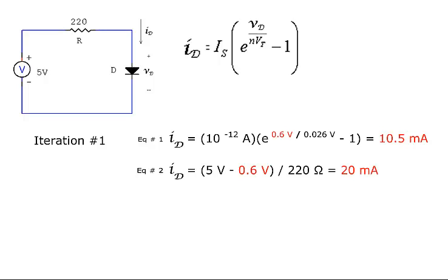The first iteration begins with a guess for the diode's voltage. In this example, the first guess is 0.6 volts. The resulting current from the first equation is 10.5 milliamps. The second equation produces 20 milliamps. They aren't even close, which means the guess was wrong.